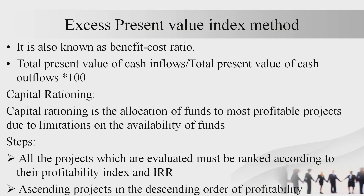The last discounting method is the excess present value index method, also called the benefit-cost ratio or profitability index. The formula is: total present value of cash inflows divided by total present value of cash outflows. The difference between NPV and the profitability index is that NPV gives an absolute comparison, while the profitability index gives a relative comparison — it compares cash inflow relative to cash outlay, helping identify which project is best in relative terms.